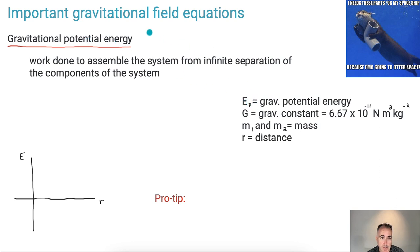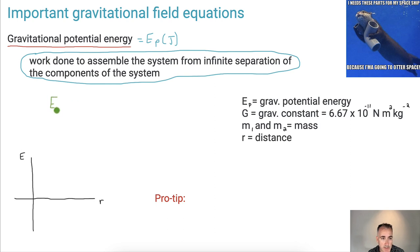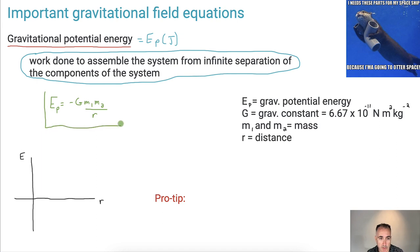Gravitational potential energy, E-P, is measured in joules. It's defined as the work done to assemble the system from infinite separation of the components — you take the pieces from infinity and bring them in. The equation is E-P equals minus G times M₁ times M₂ over R. A really common mistake is forgetting it's not R squared. If you're thinking about gravitational force, that's R squared, but potential energy is just over R. This is really important to remember.